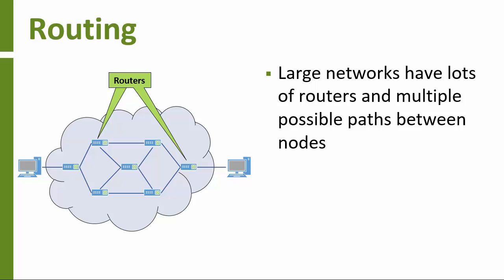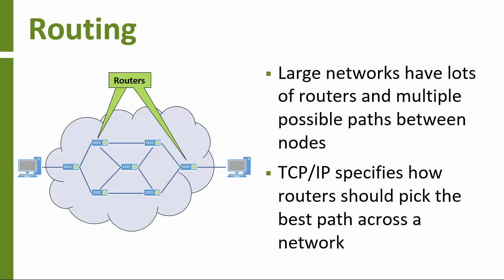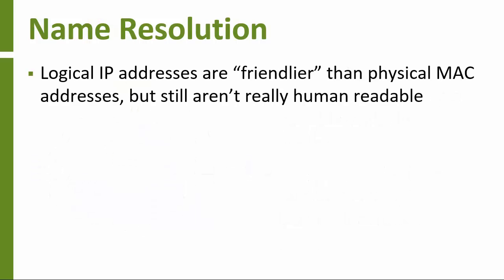Large redundant networks, like the internet, have huge numbers of routers and multiple possible paths between computers. TCP-IP includes protocols that specify how routers should pick the best path through the network to transmit data. A system's logical address, or IP address, is definitely a little user-friendlier than a network adapter's hexadecimal physical address, but it's still not really something your average user can, or should have to, deal with — you'd probably have a hard time remembering whether a computer's logical address was 10.1.1.11 or 10.1.1.12.